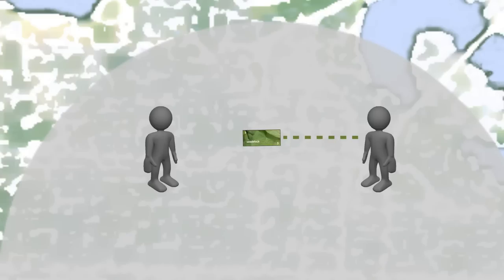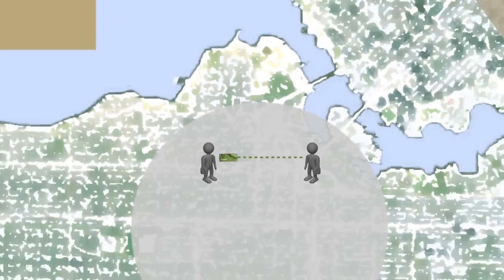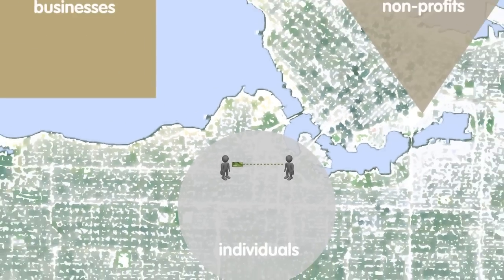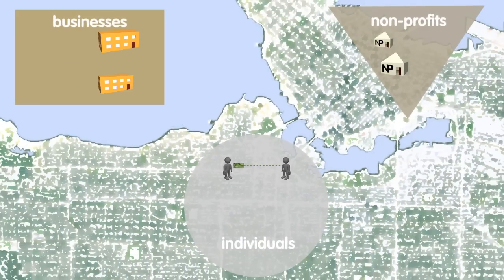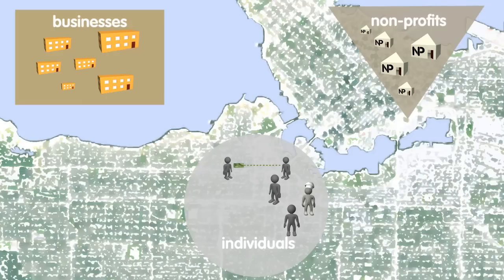When you spend Seedstock, on the other hand, you're spending it in a network of businesses and people in your community who've chosen to participate. It's a much smaller network. You might say it's the ultimate form of buying local, because that dollar will always circulate within the community.